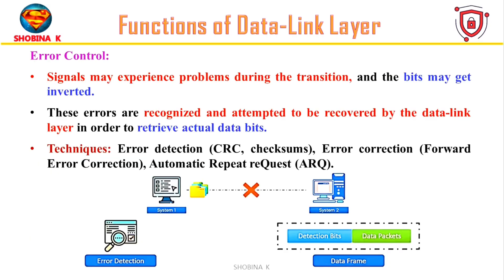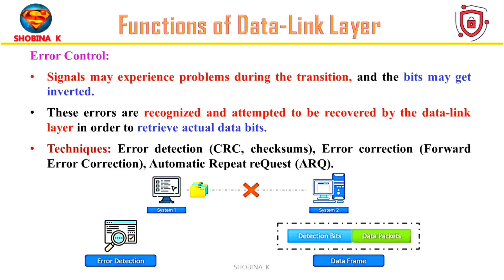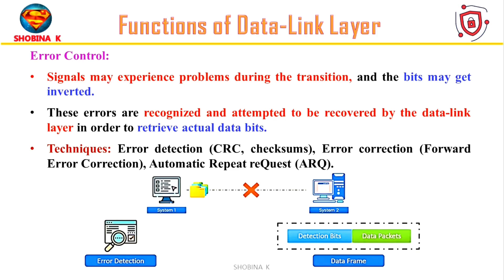Moving further, we have error control. During data transmission, due to noise or signal loss, errors might occur. To minimize such data error rates, the data link layer performs error detection and correction techniques on the transmitted data. Error detection techniques like CRC checksums and error correction techniques like forward error correction and automatic repeat request enable the data link layer to provide reliable and efficient data transmission.